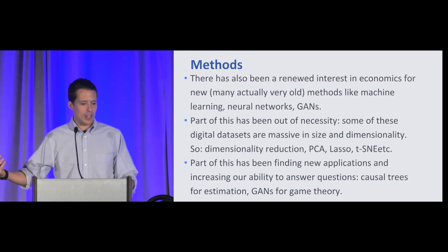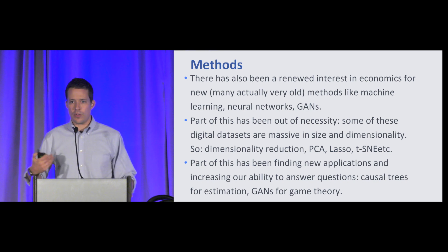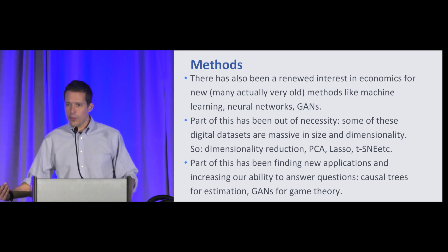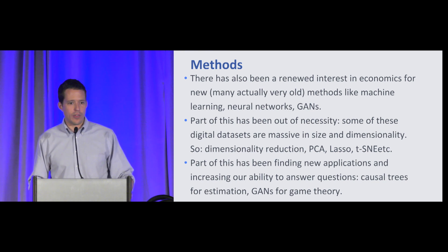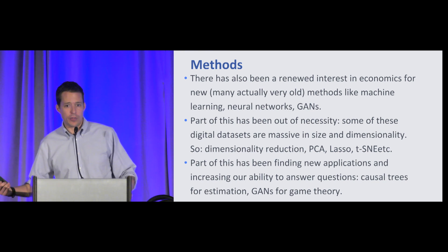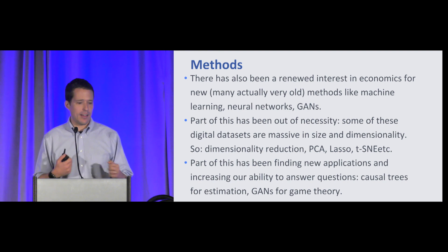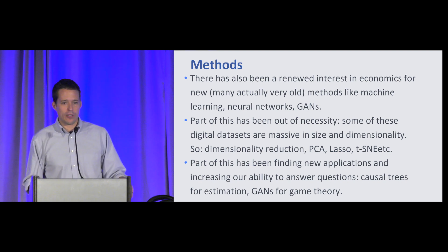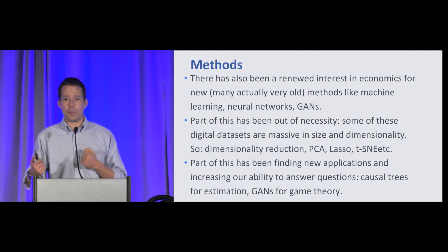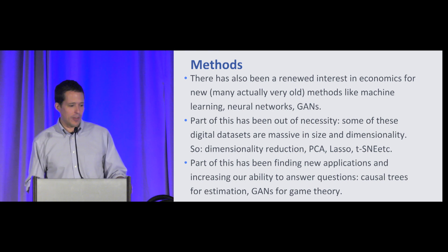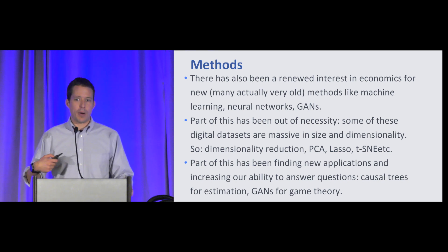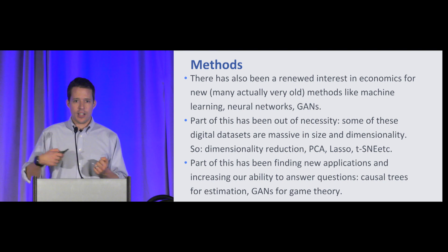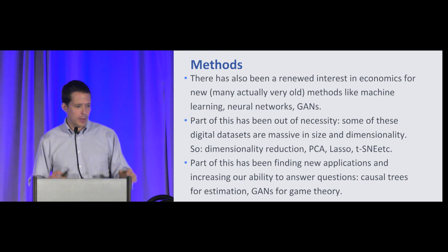There's also a new ability to do causal inference using the data, like causal trees. There are applications like GANs for game theory research — getting generative adversarial networks to play games against each other and finding properties of equilibria. Part of this isn't just being able to use the data; it's actually using these methods to answer completely new questions.